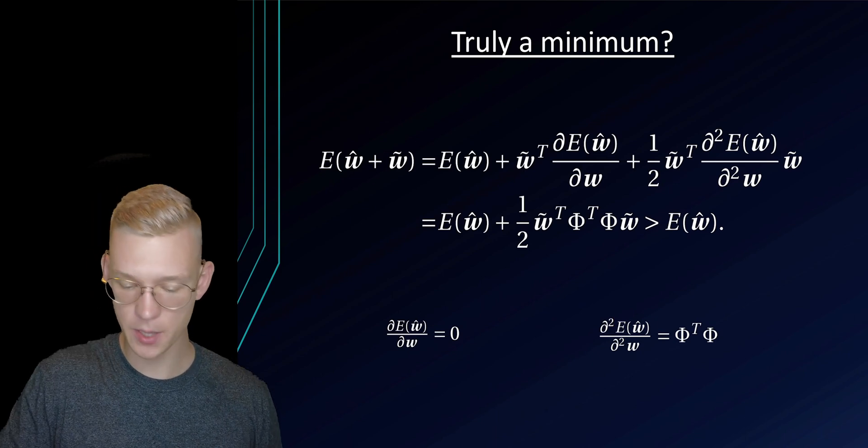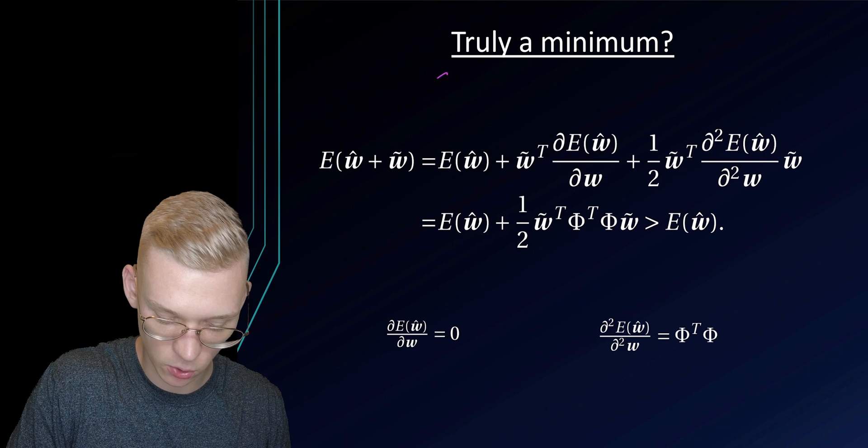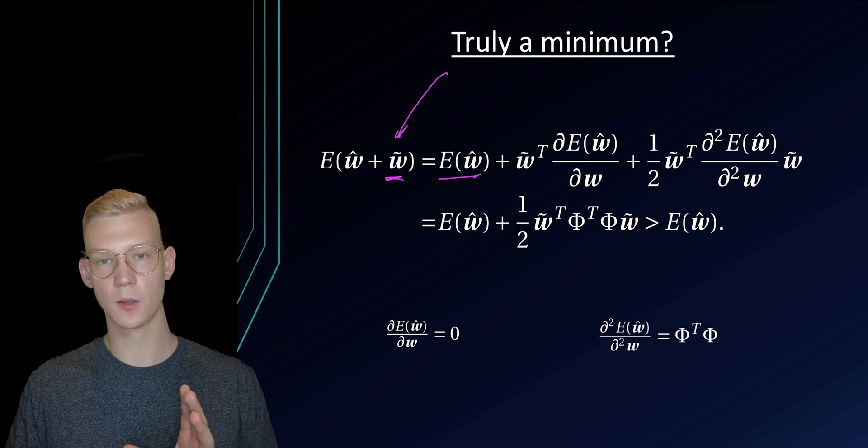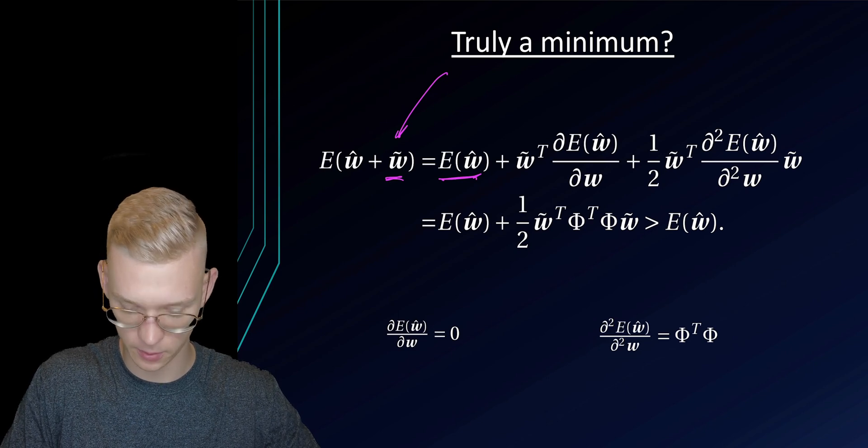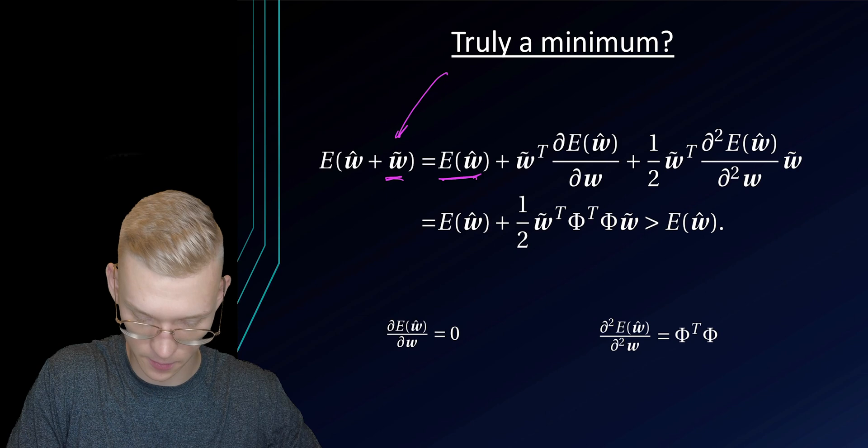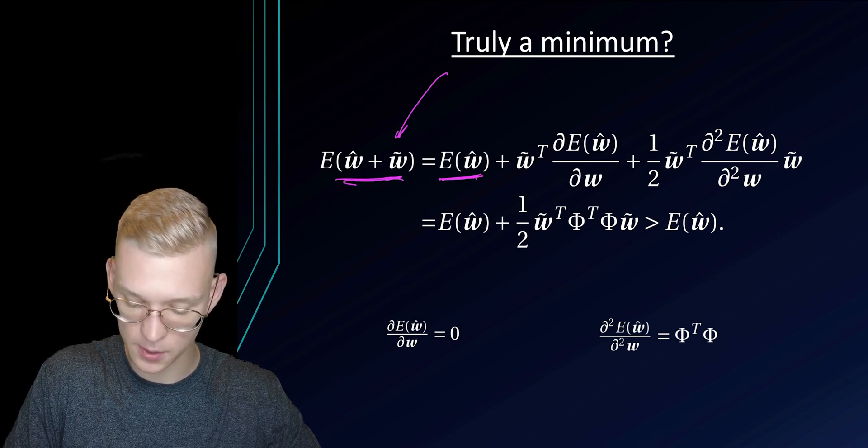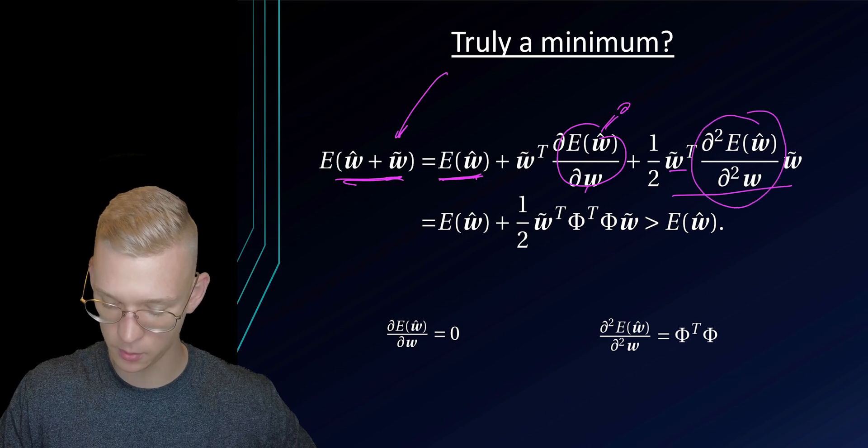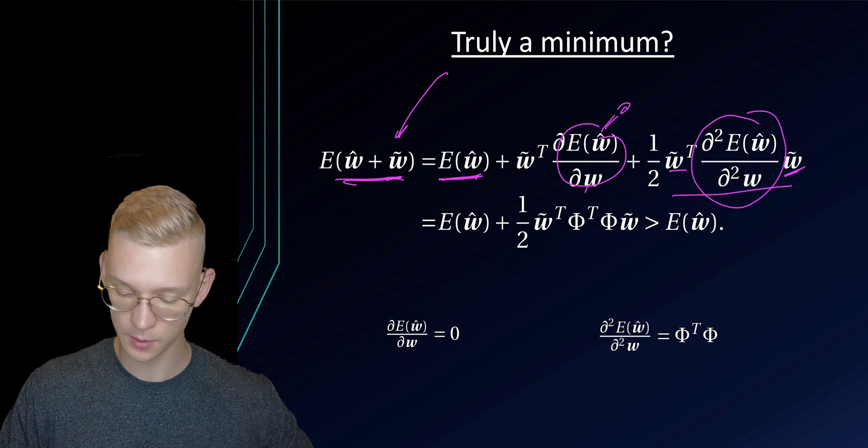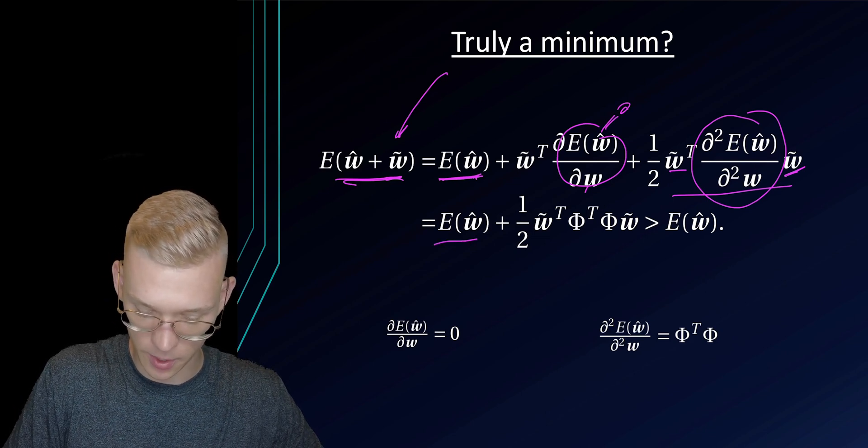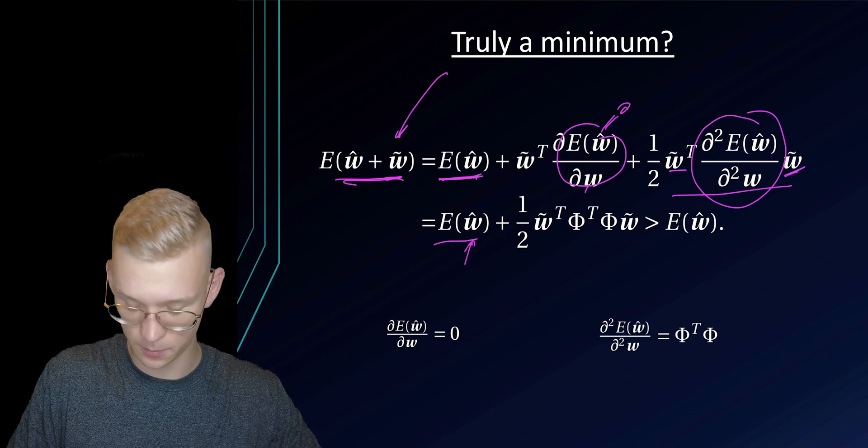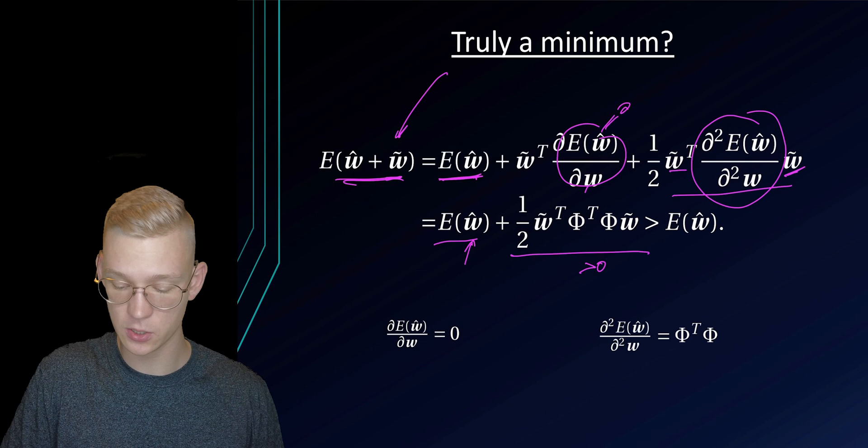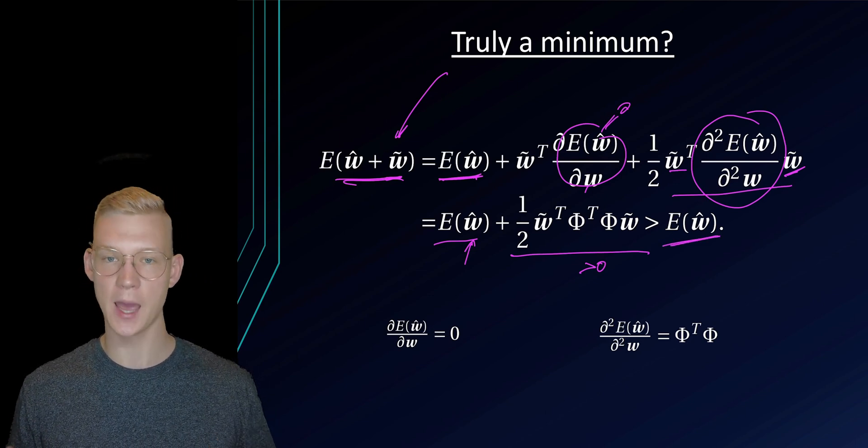Now we could ask ourselves, is it truly a minimum? This is fairly easy to check. So what if we add a small w tilde to our vector. We have our Taylor expansion of error of w plus w tilde, which is equal to the error at w plus a derivative with respect to w, which is zero, plus one half times w tilde transpose times the double derivative times w tilde. We see that this is our error at the parameters that we chose plus some value that is larger than zero. So if we deviate from our parameters, it is actually truly a minimum.